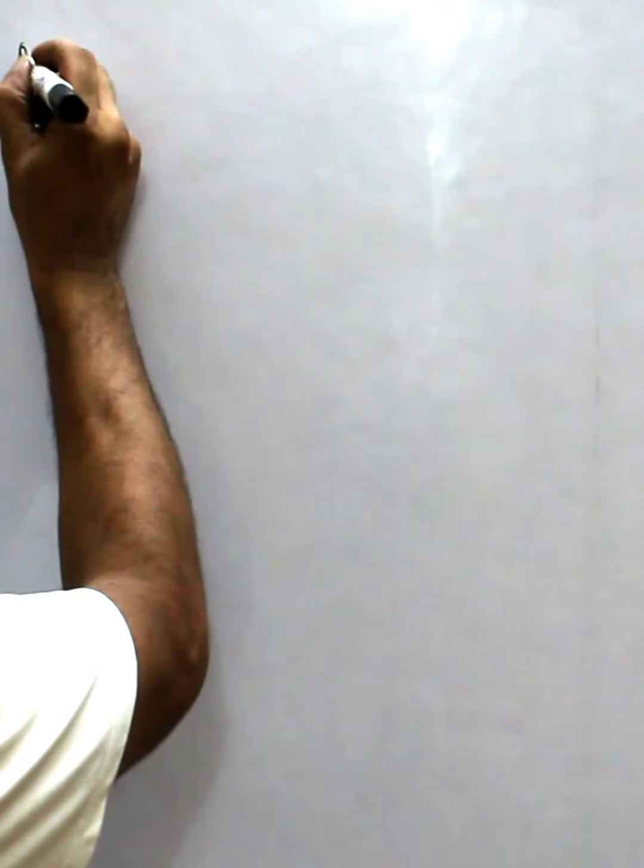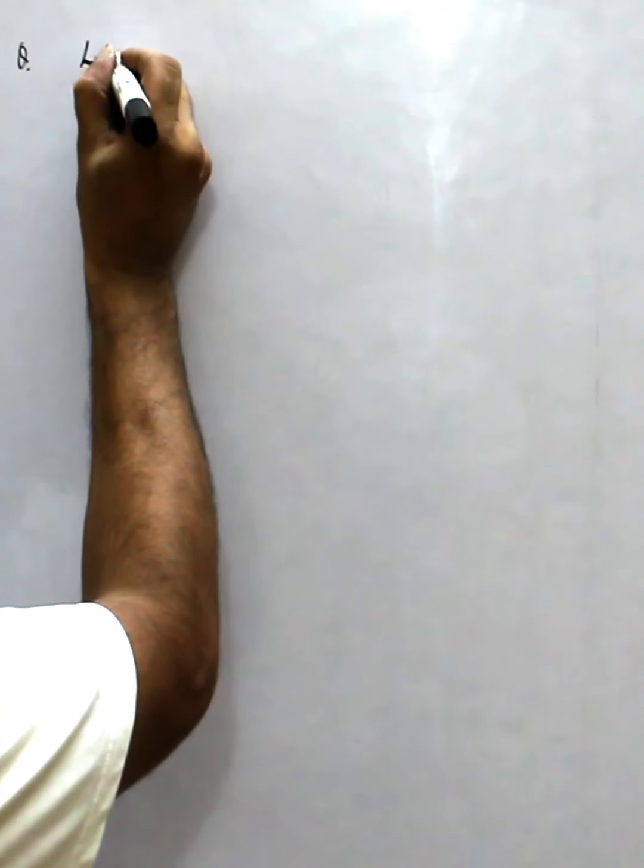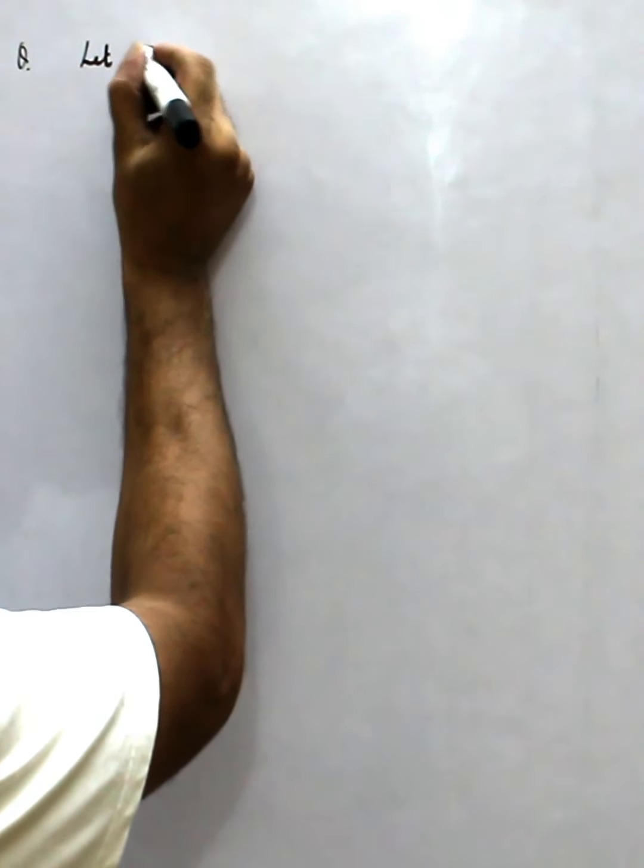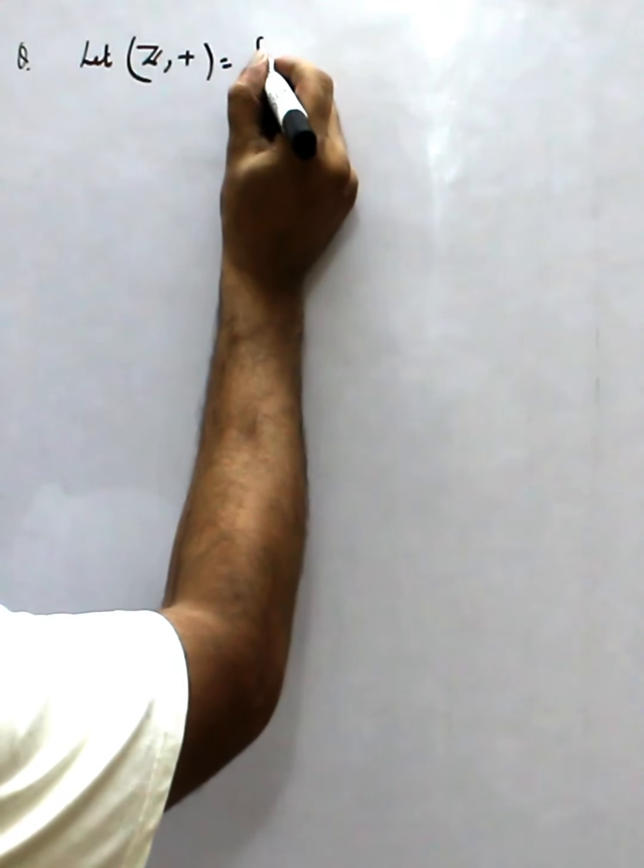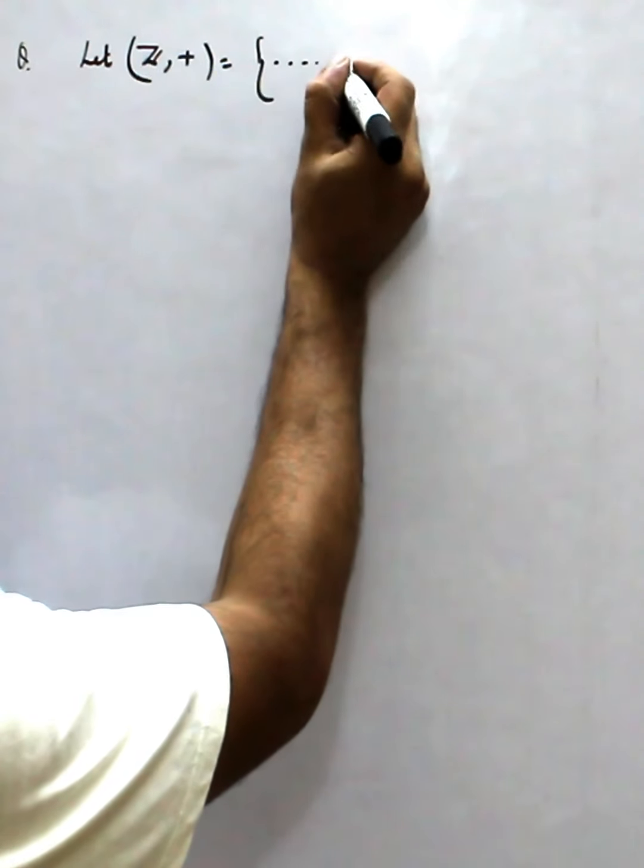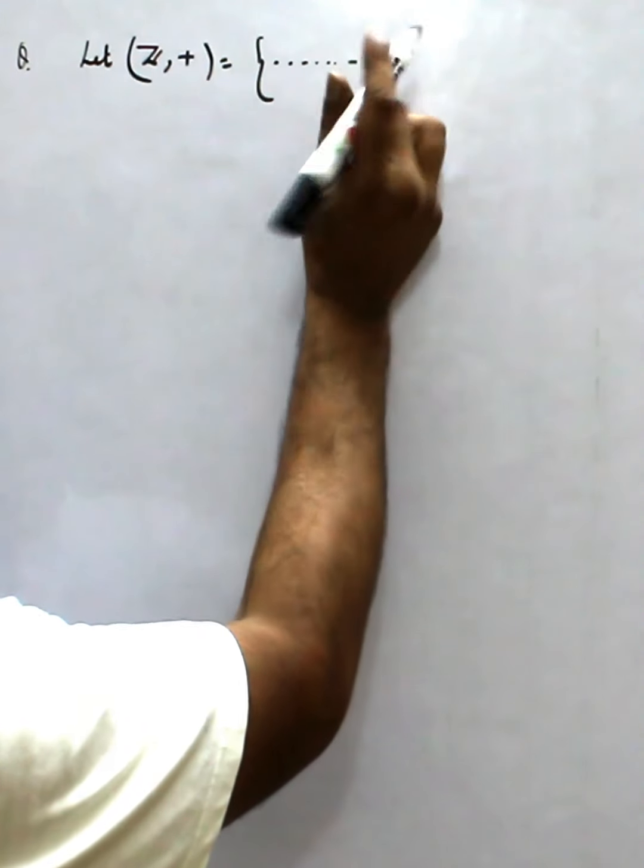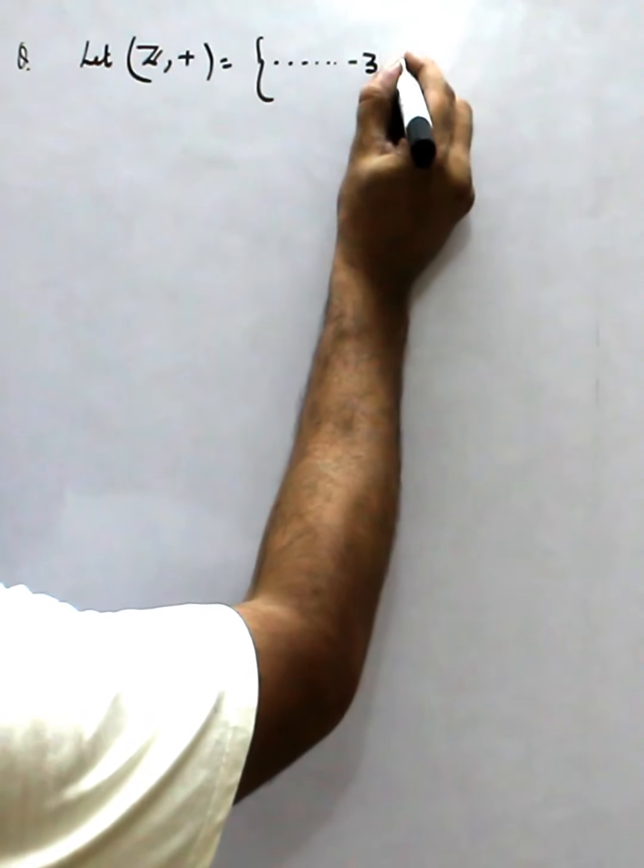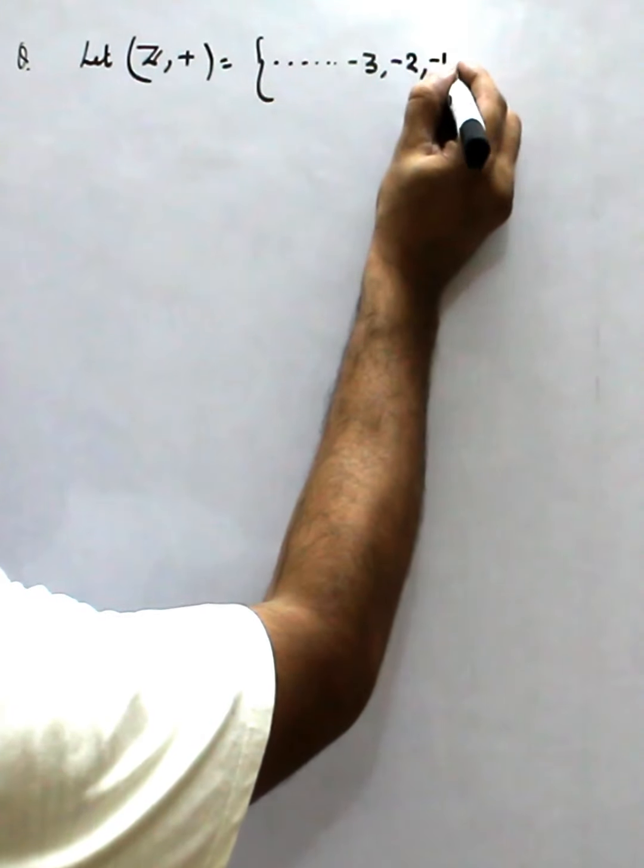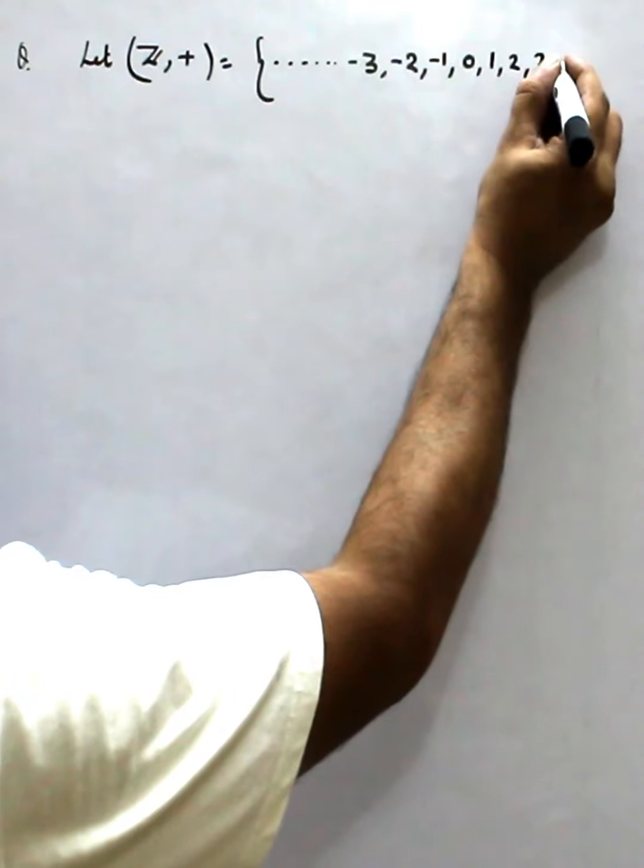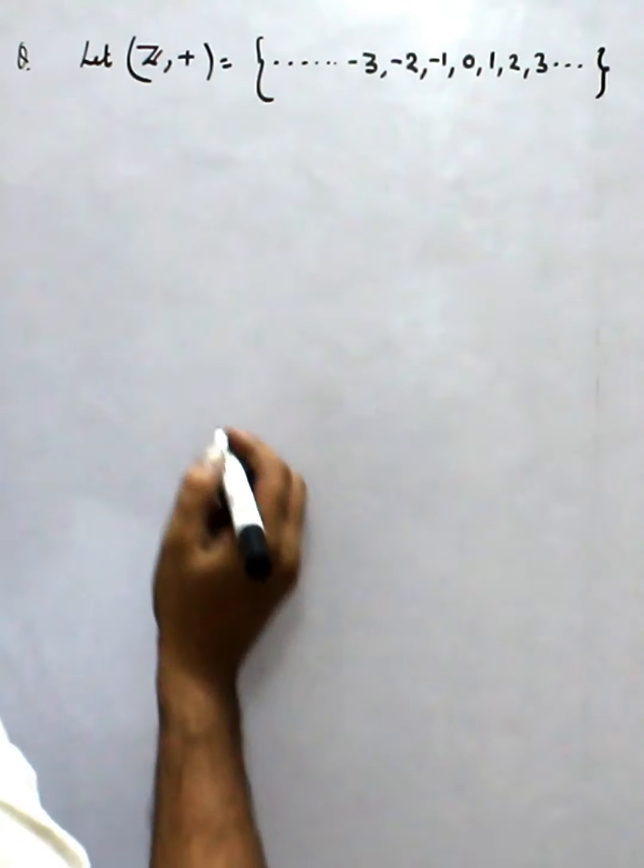Our question: let Z with respect to addition be the group minus 3, minus 2, minus 1, 0, 1, 2, 3 and so on.